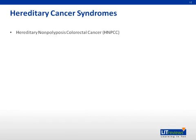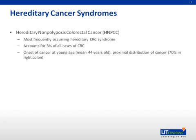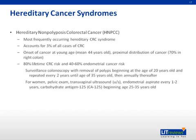Hereditary nonpolyposis colorectal cancer is the most frequently occurring hereditary colorectal cancer syndrome in the United States. It accounts for about 3% of all cases of colorectal cancer and for about 15% of such cancers in patients with a family history of colorectal cancer. This syndrome is characterized by onset of cancer at a relatively young age with a mean of 44 years old, a proximal distribution with 70% of cancers located in the right colon. There is an 80% lifetime colorectal cancer risk and 40-60% endometrial cancer risk. It is recommended that a program of surveillance colonoscopy should begin at the age of 20 years with removal of polyps and repeated every 2 years until the age of 35 years and then annually thereafter.